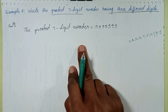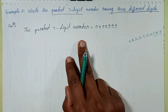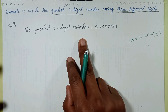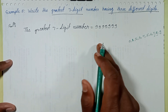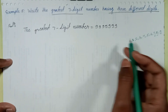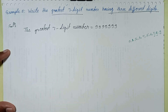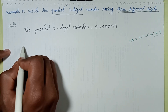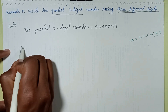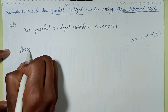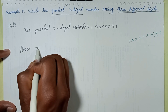With the greatest digit number, let's solve this question. The required number is formed using these digits.